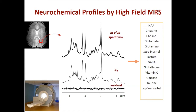These neurochemicals need to be on the millimolar level or higher, and they each have a spectral signature. The intensities of these peaks are proportional to the concentration in the tissue selected. With this method, we can quantify endogenous concentrated neurochemicals and evaluate their changes in various diseases.